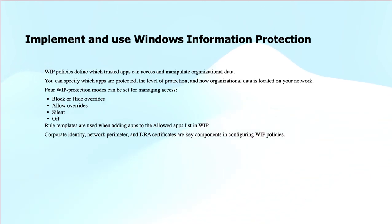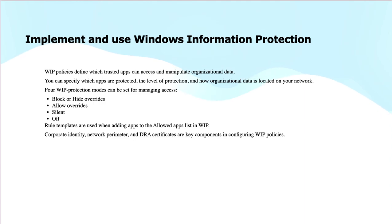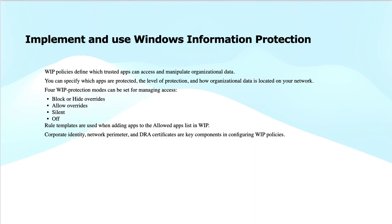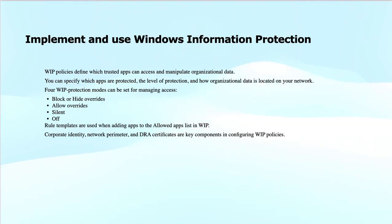WIP's protection model offers four protection modes to manage app access. Number one is Block or Hide Overrides, which prevents applications from overriding or accessing protected data. Next is Allow Overrides, which allows users to override certain restrictions under specific conditions. Then there is Silent mode, where WIP silently enforces policies without notifying the user, offering transparency. Finally, Off simply disables WIP protection. App list rule templates are also available to add applications to the allowed applications list, ensuring only specific applications can access or manipulate organization data securely.